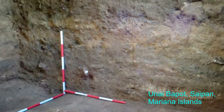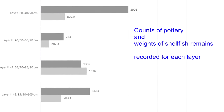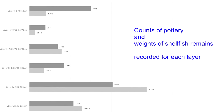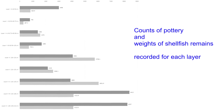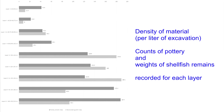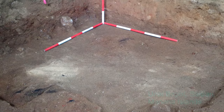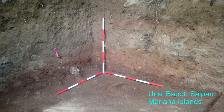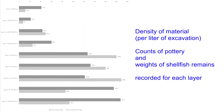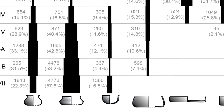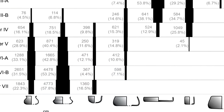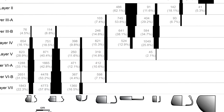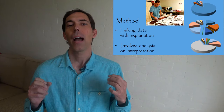Regarding an excavation at Unaibaput in Saipan, I tabulated the numbers of pottery fragments and the weights of shellfish remains for each stratigraphic layer, and then I presented those results in a simple graph. Next, I calculated the density of those materials per liter of excavation in each layer. In this way, I could see more clearly about the intensity of past cultural activities represented in each layer. In order to achieve this result, I first had needed to be aware of recording the measures of excavation during the technical operation of the excavation. Furthermore, I recorded my observations of each separate form or style of pottery as a way to trace the change through time in the pottery traditions, in this case spanning more than 3,500 years.